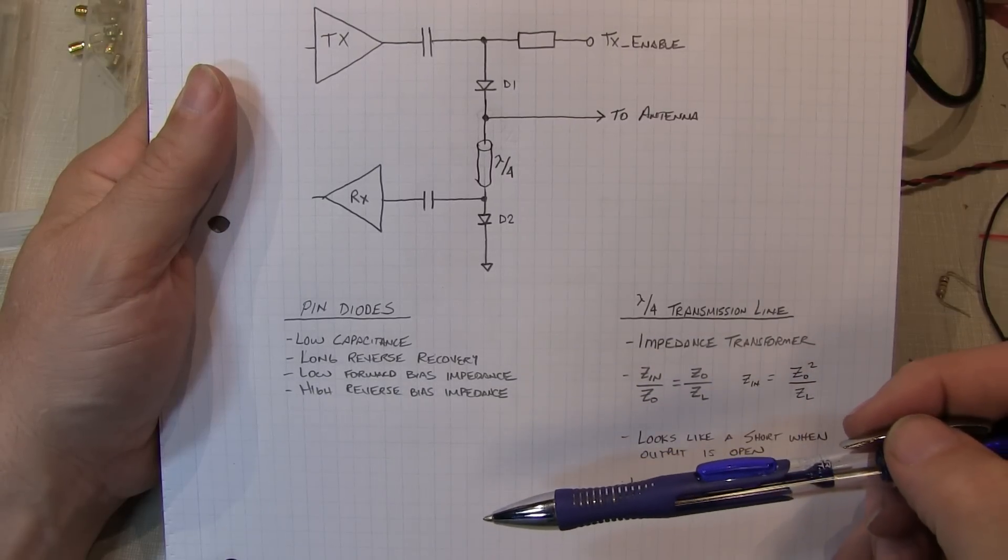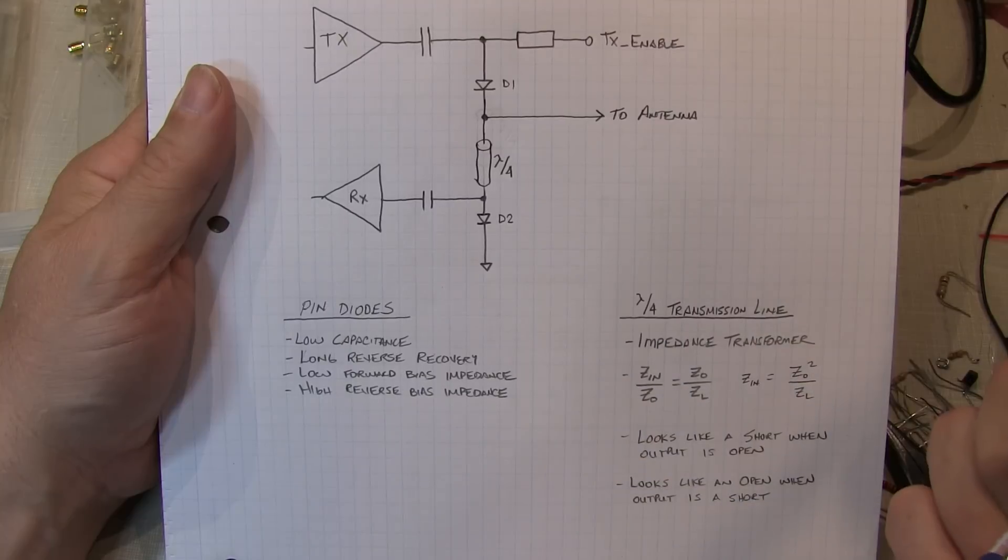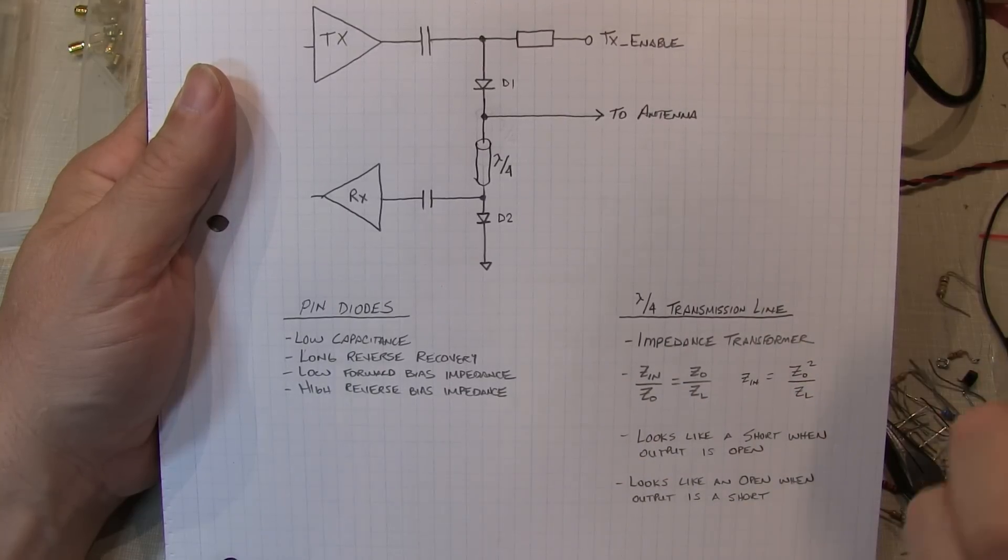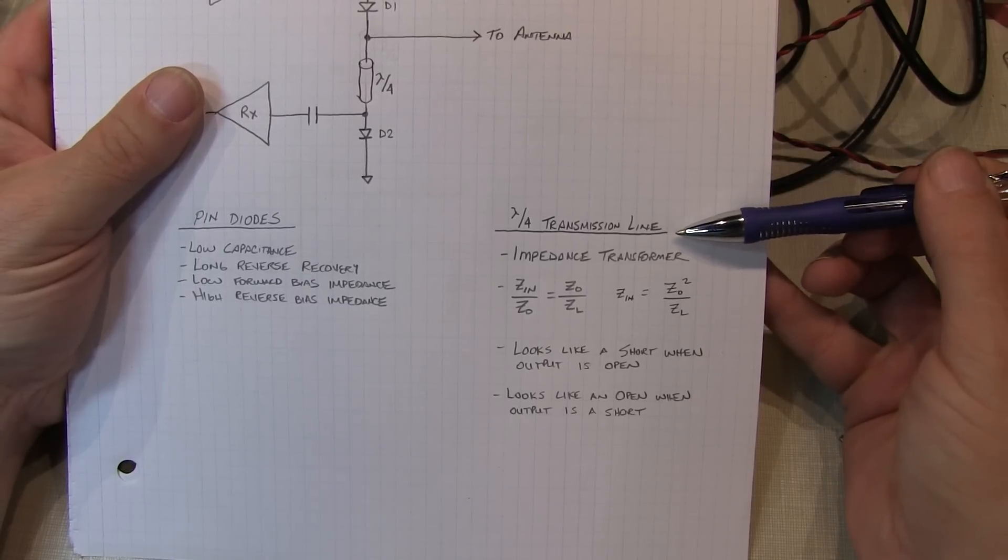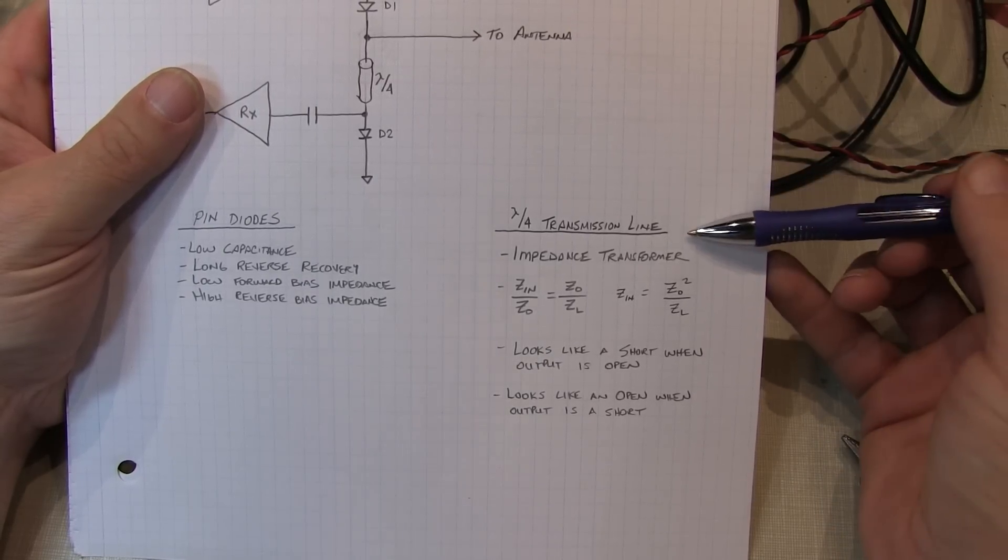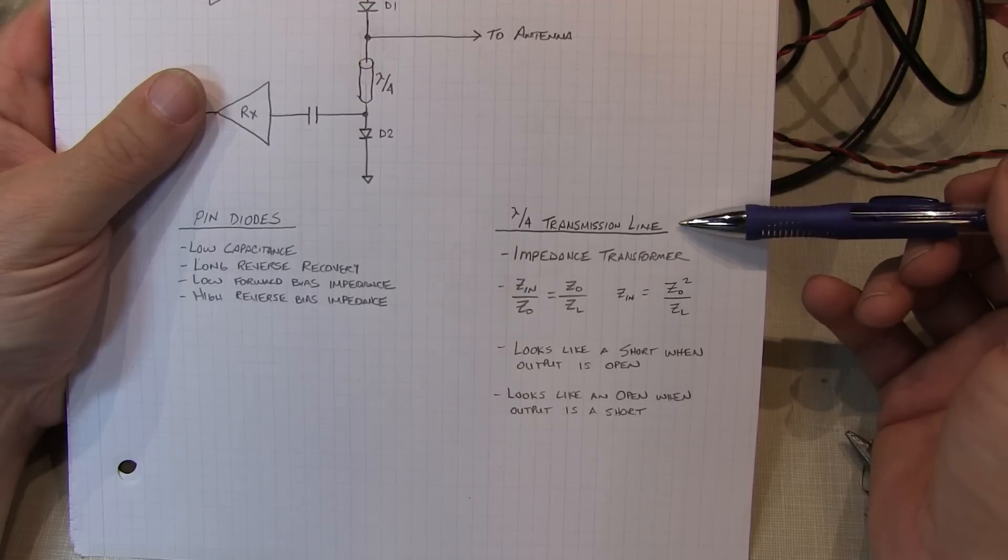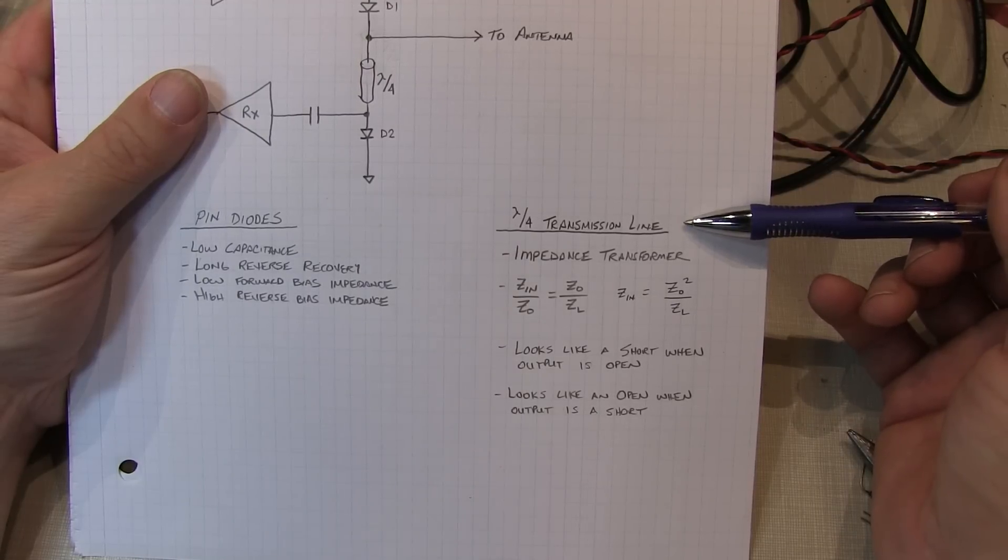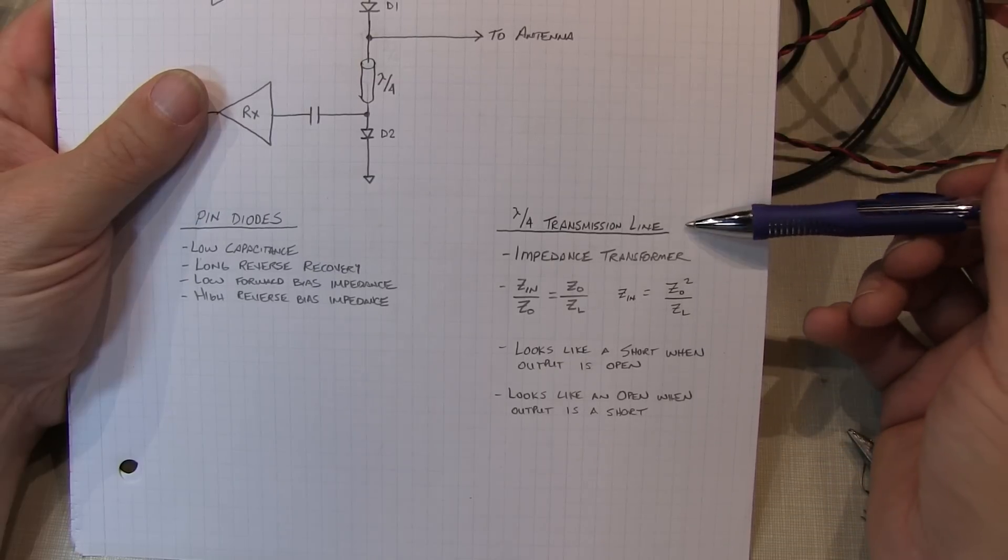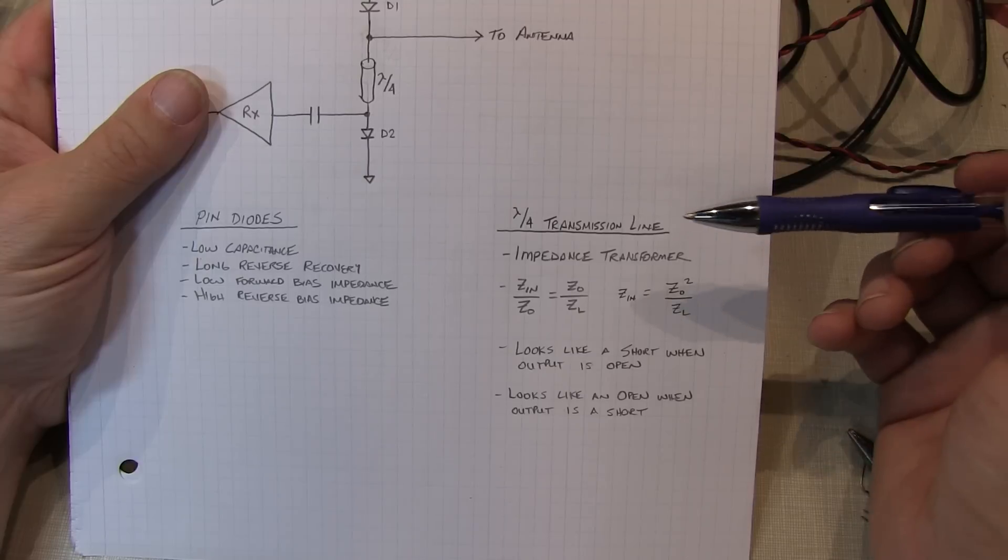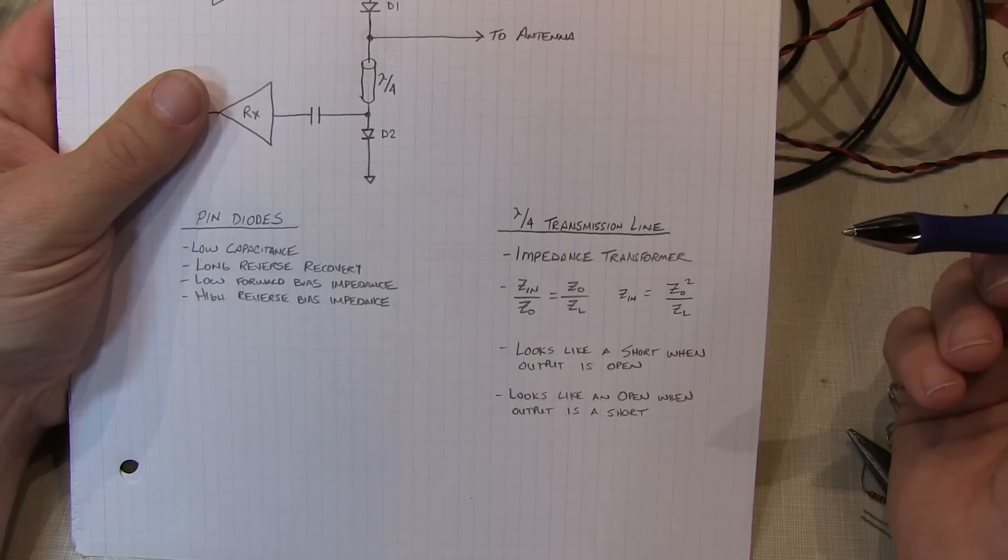Again, take a look at the links in the video description for diode switching and my video on pin diodes to review that. Now, we're also using a quarter wavelength long transmission line. What makes this special? Well, I did a video on this also. In fact, the video on tracking generators shows the properties of a quarter wavelength transmission line. So again, I'll link that video down below as well.